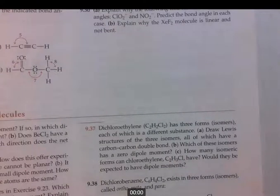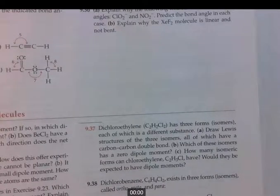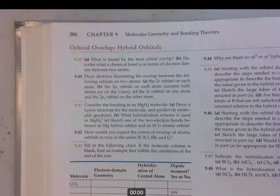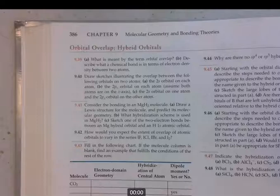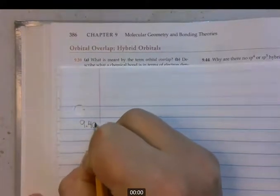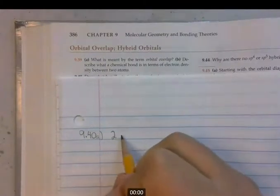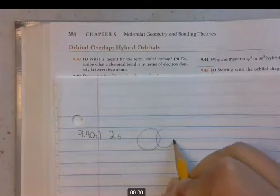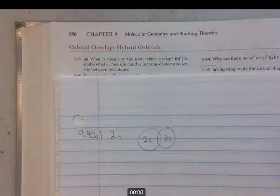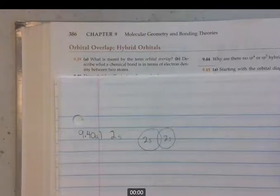Next is 9-40. It asks to draw sketches illustrating the overlap between the following orbitals on two atoms. Part a wants two 2s orbitals on each atom. So if you have 2s orbitals, they're spherical and they're simply going to overlap. So this is a 2s and this is a 2s right there. That could be, for example, lithium with two bonding 2s orbitals like that.